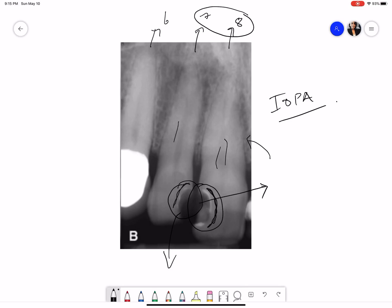And then we see that the pulp canal space looks normal, the PDL is not widened, the periapical area is normal as well, the trabecular pattern looks good and again we see interradicular bone loss with respect to number 7.